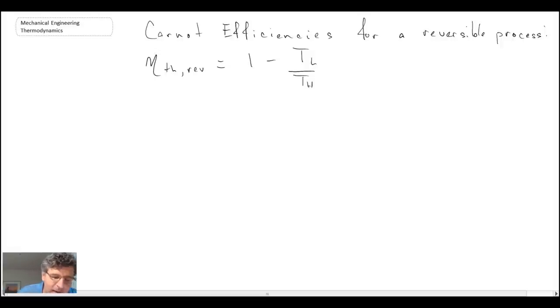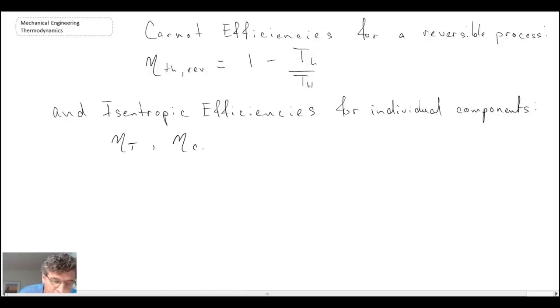The last thing that we looked at with the efficiencies were the isentropic efficiencies or the adiabatic efficiencies for different components that we might have within a cycle that we're examining. And here it was things like ETA-T for a turbine, ETA-C for a compressor, ETA-P for a pump, and ETA-N for a nozzle.